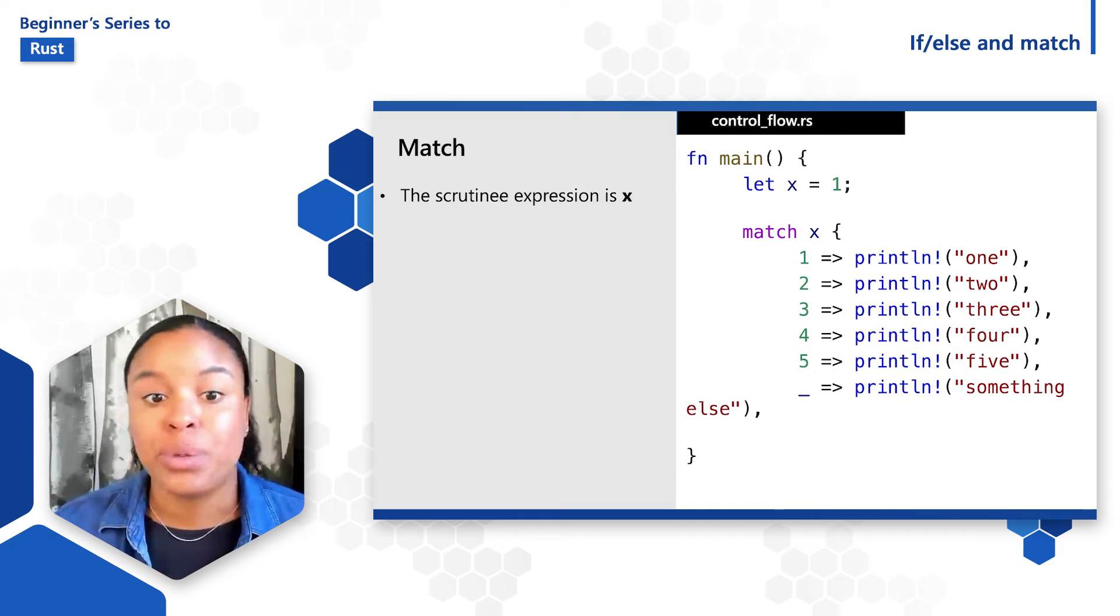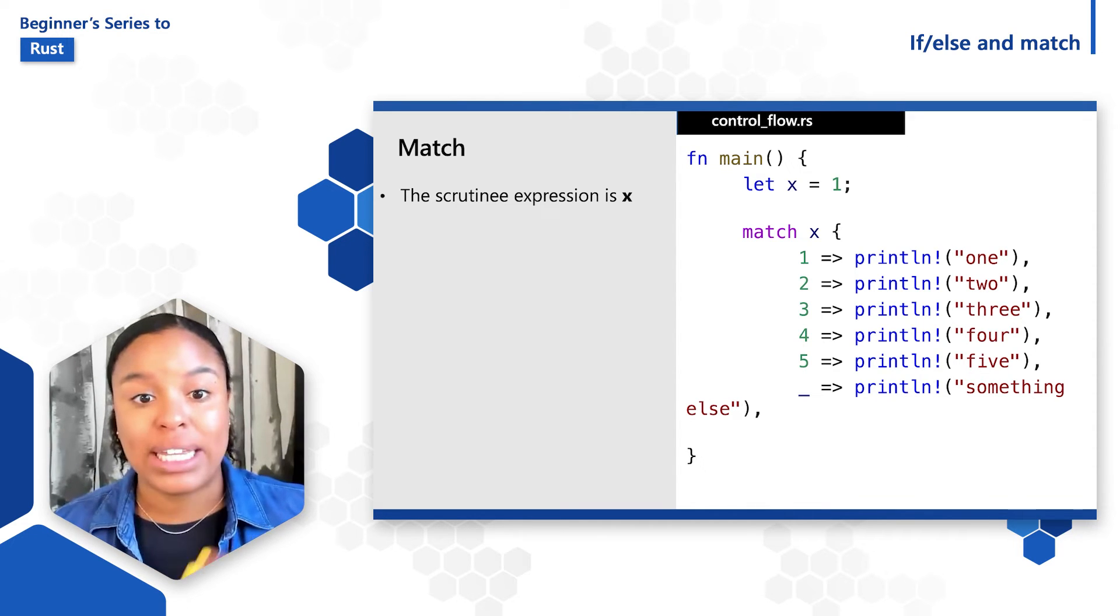So what's happening here is that the scrutiny expression is x with the value of 1 and is compared with each of the arms in the match expression.